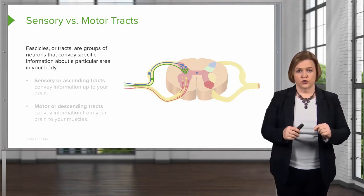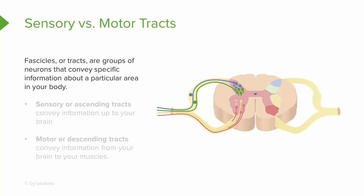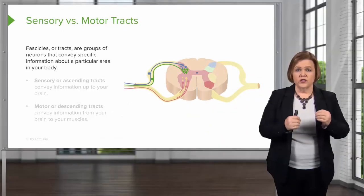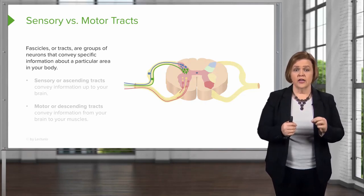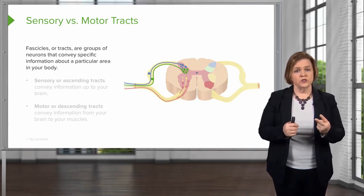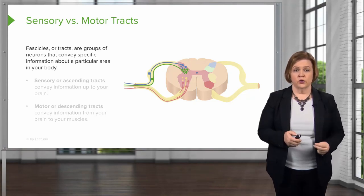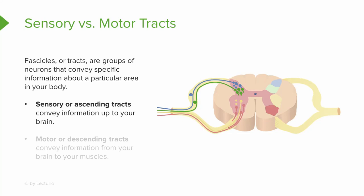So we're talking about sensory and motor tracks. Fascicles or tracks are groups of neurons that help convey specific information about a particular area in your body. We have sensory tracks and we have motor tracks. These tracks convey specific information about a particular area in your body. The sensory ones are ascending — they convey information up to your brain. Motor tracks are descending — they convey information from your brain to your muscles.